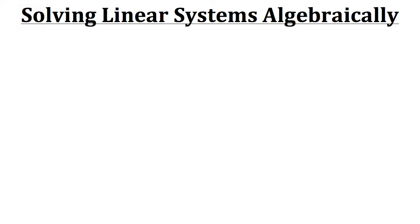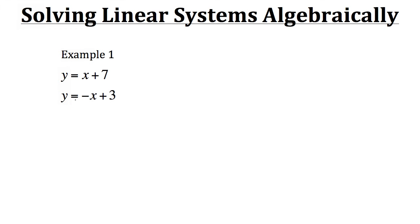In this tutorial, we're going to look at two specific methods on how we could solve linear systems algebraically. Let's start off by taking a look at a couple of examples for what is known as the substitution method. So here in example one, we have our system of two linear equations: y equals x plus 7 and y equals negative x plus 3.